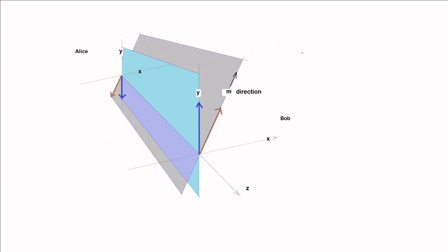Suppose a y-measurement has just been made, and the two particles consequently have opposite spins along the y-direction. Suppose Bob now makes a second measurement, this time along the x-direction.